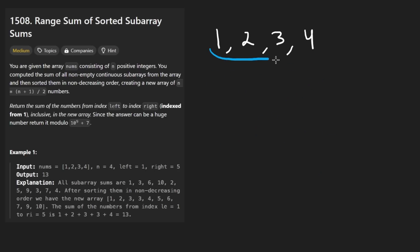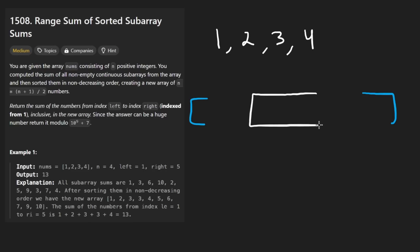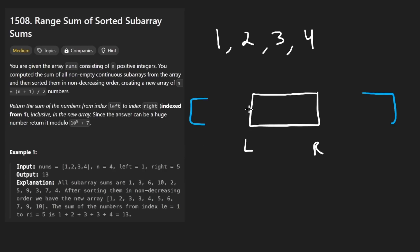We get the sum of every single subarray, producing an array roughly n squared in length. From that array, we want the sum of a subarray from a left index up to a right index — parameters given to us. The sum could be really large, so they want us to mod it by a big prime number.